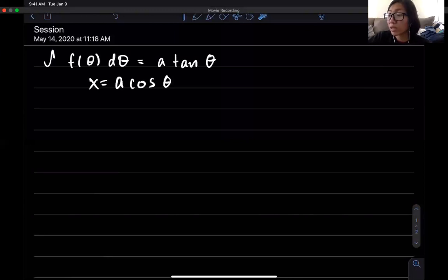So the way that this works is okay now let's solve for this cosine theta. So we would just divide both sides by a so we get cosine of theta is equal to x over a.